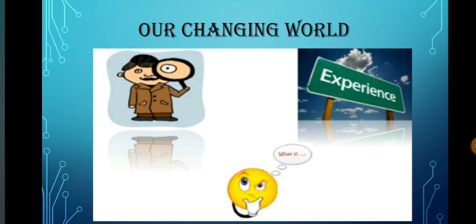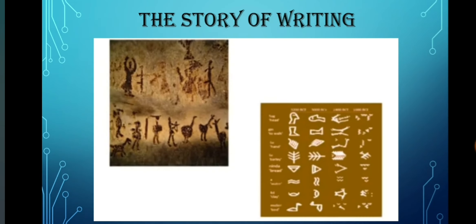The world of growing knowledge and progress started with the observation and experience of human beings who have the capacity of thinking. Early humans passed the knowledge to the next generation orally. Gradually, the knowledge grew so much that it was not possible to memorize it. People started feeling the need for recording this knowledge. This was the beginning of writing.